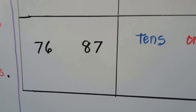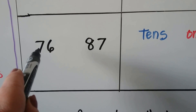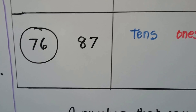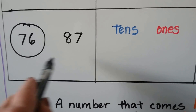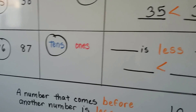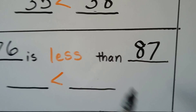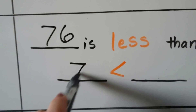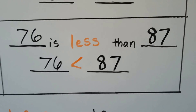We have seventy-six and eighty-seven — which one's less? We look at the tens place. This has seven tens, this has eight tens. Seven is smaller than eight, so this one's less. We used the tens place. Seventy-six is less than eighty-seven. We can write it using the symbol: seventy-six is less than eighty-seven. The little tip is facing the smaller number, and the big open side is facing the larger number.